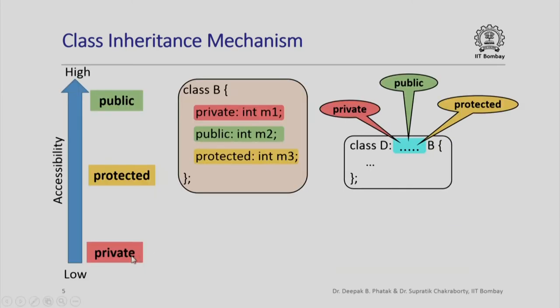These three keywords — private, protected, and public — represent an ordering of accessibility. Anything that is private is meant to be very less accessible, something which is public is meant to be highly accessible, and protected lies somewhere in between.